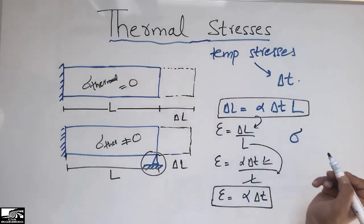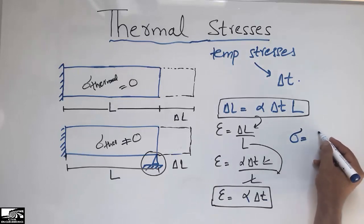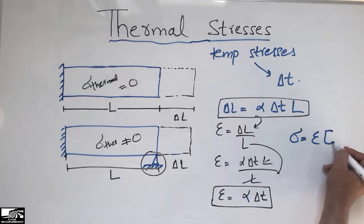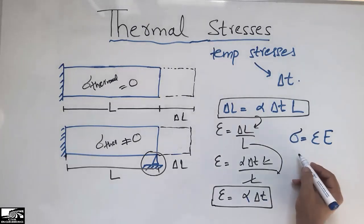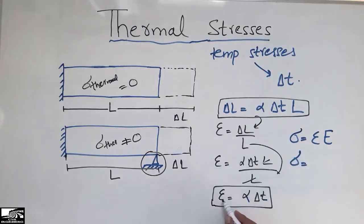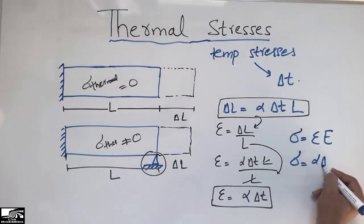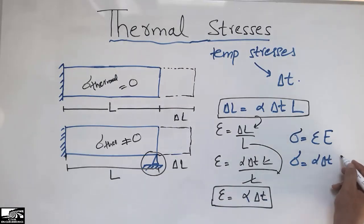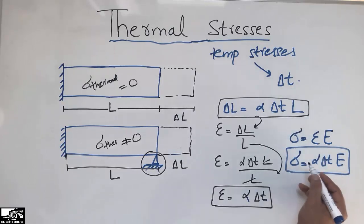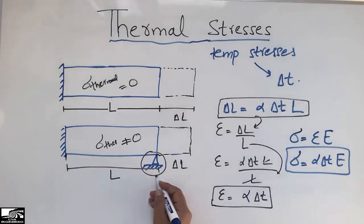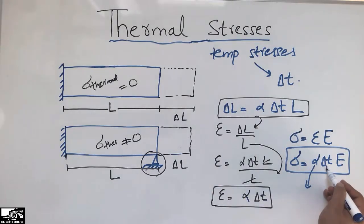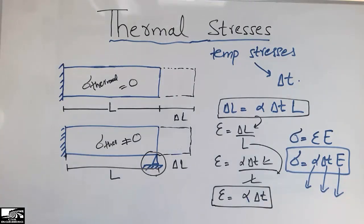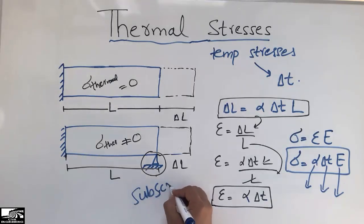Now for thermal stress: from Hooke's Law, stress equals strain times the modulus of elasticity E. Substituting the thermal strain, thermal stress equals E times alpha times delta T. This gives us the thermal stress created in an object when there is a restraint. It depends on alpha, the change in temperature, and the elasticity of the material. Hope you understand the concept of thermal stresses. Please subscribe to our channel. Thank you for watching.